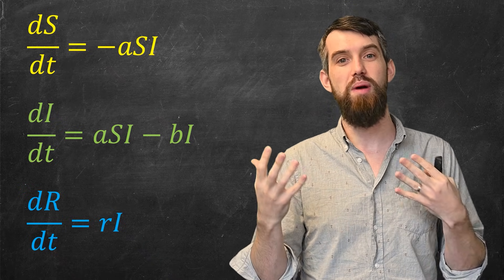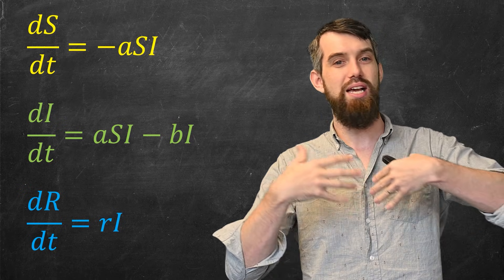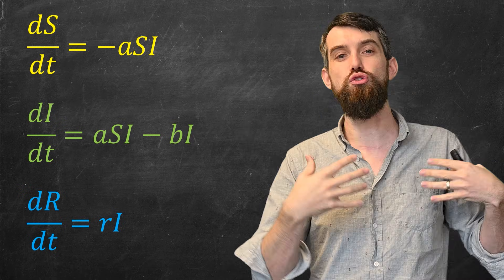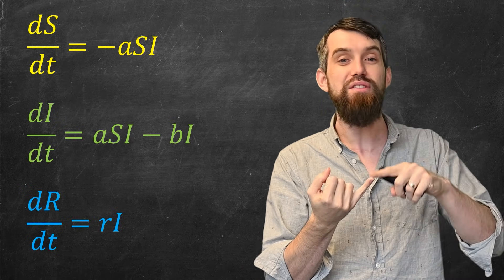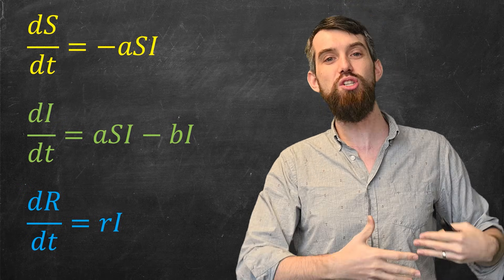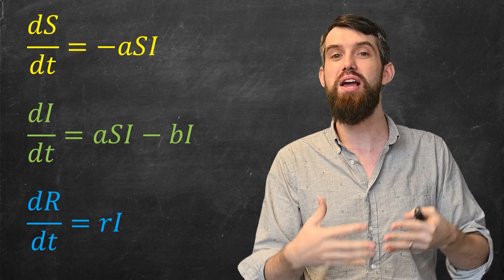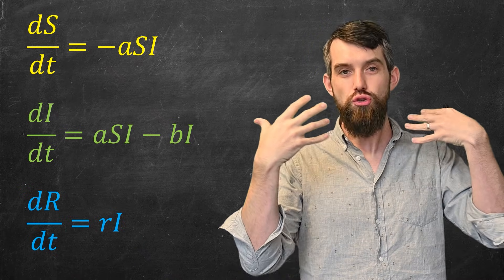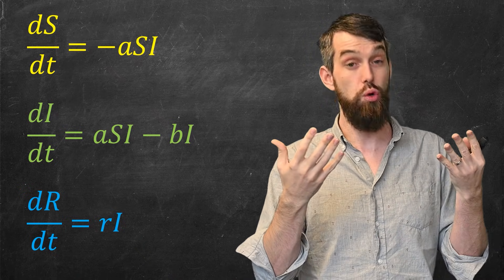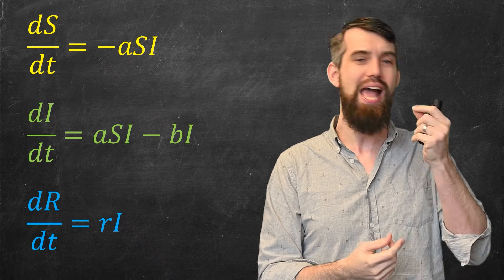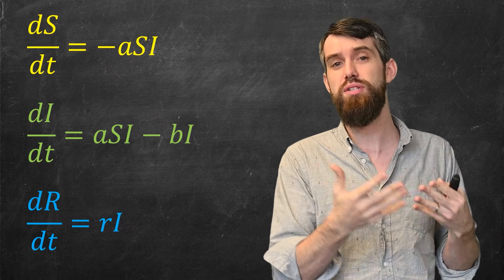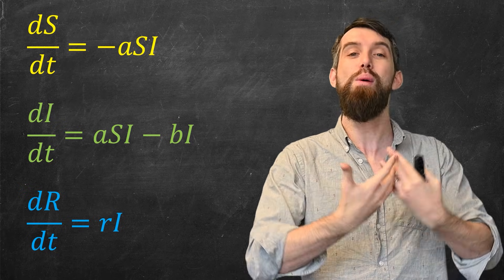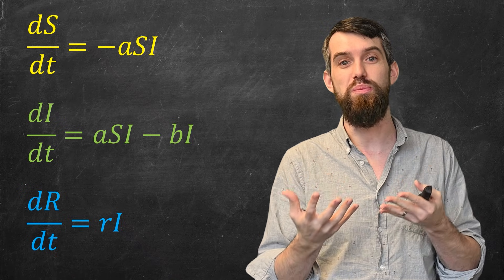This is a system of differential equations. Much like a system of equations in general, all three equations must be true at the same time. In this video, we're not going to completely solve this particular system of nonlinear differential equations — the S·I term creates nonlinearity, which turns out to be challenging. But we can still get a lot of nice qualitative features about how epidemics spread from analyzing this system.